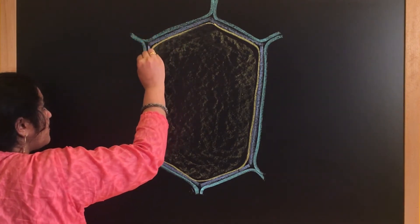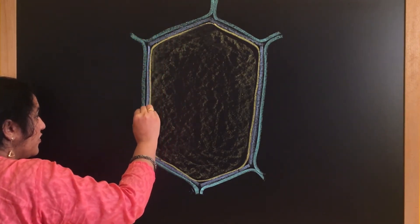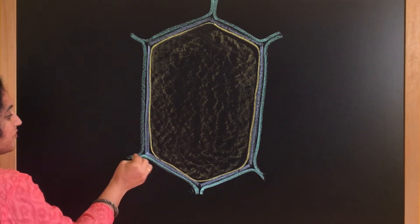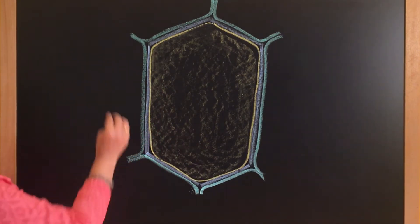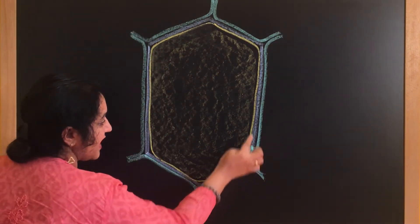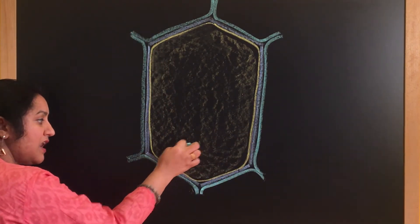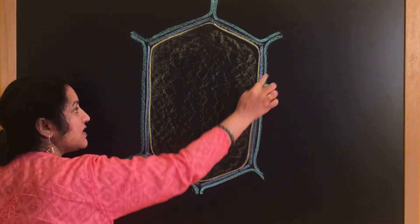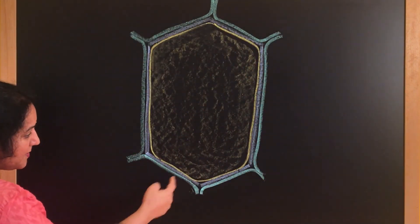So these lines that we are drawing here are actually representing the cell walls of the neighboring cells. The blue line is actually the cell wall of this cell, and these green lines are all the cell walls of the neighboring cells. So if you look at this diagram,